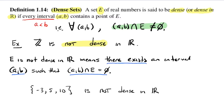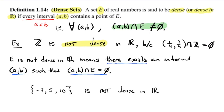Back to examples: why isn't ℤ dense in ℝ? Because, for example, take the interval (1/4, 3/4) — between 0.25 and 0.75. If I intersect that with the integers, I get the empty set. There is no integer between one quarter and three quarters. So the integers are not a dense subset of ℝ.